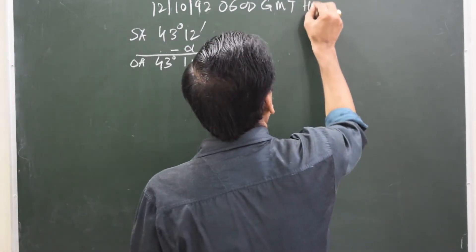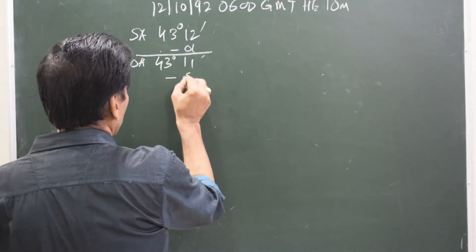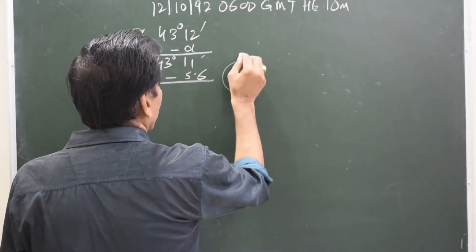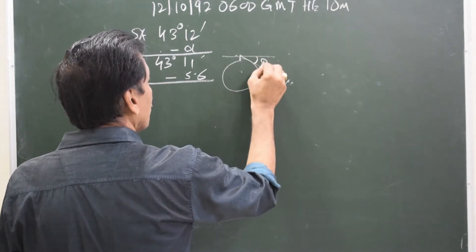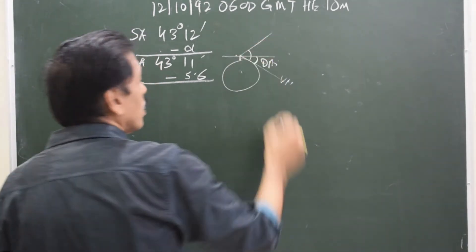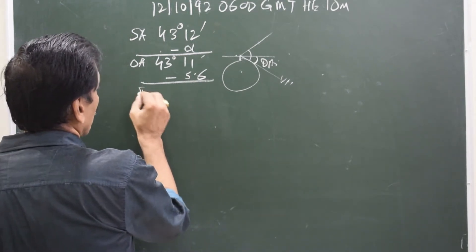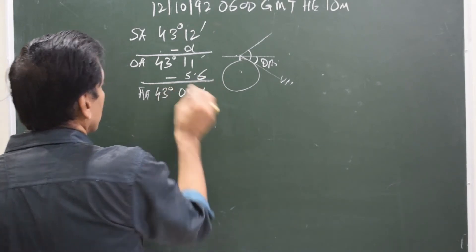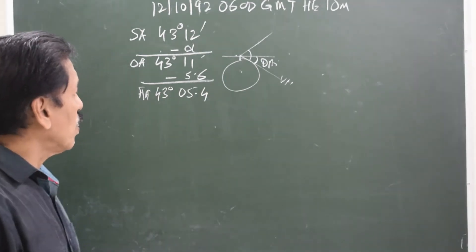Say height of eye was 10 meters, for which if you see the almanac, the dip correction would be 5.6. Dip is always negative, because of the height of eye — this is the visible horizon and this is the sensible horizon. This angle is dip, always negative, because from the observed altitude you must subtract dip to get apparent altitude. So apparent altitude is 43 degrees 5.4 minutes.